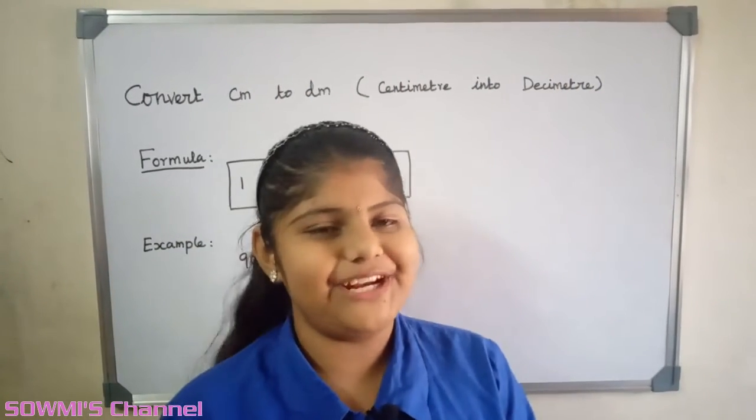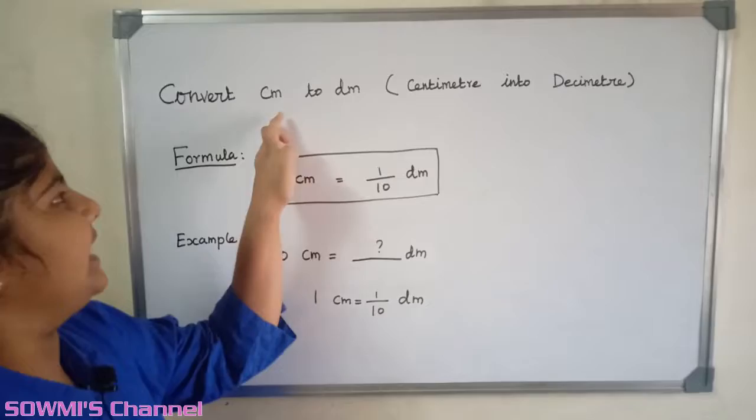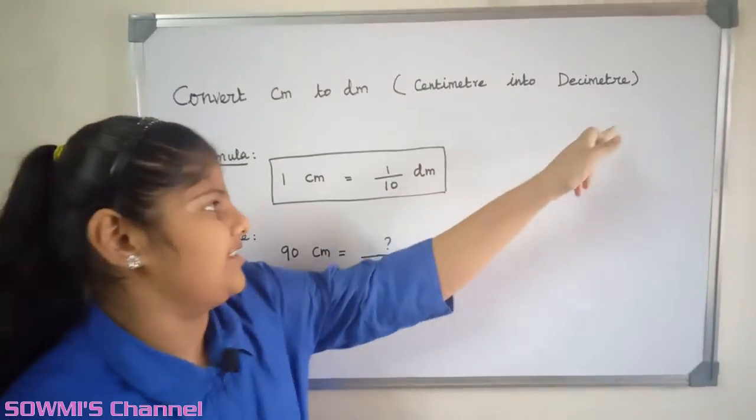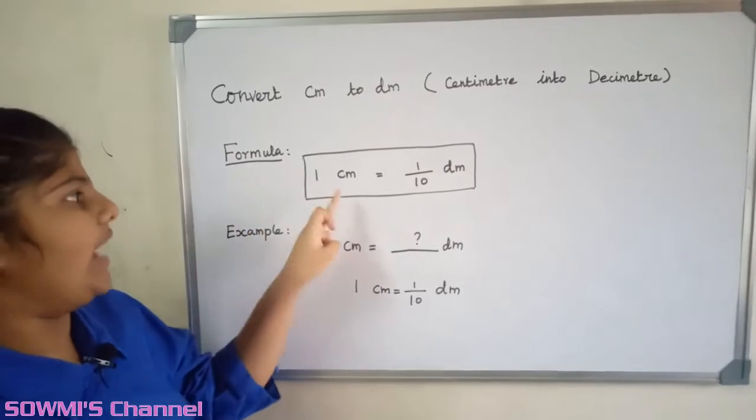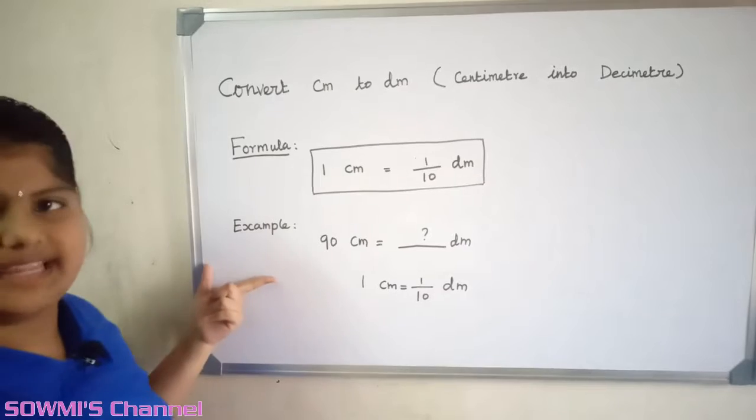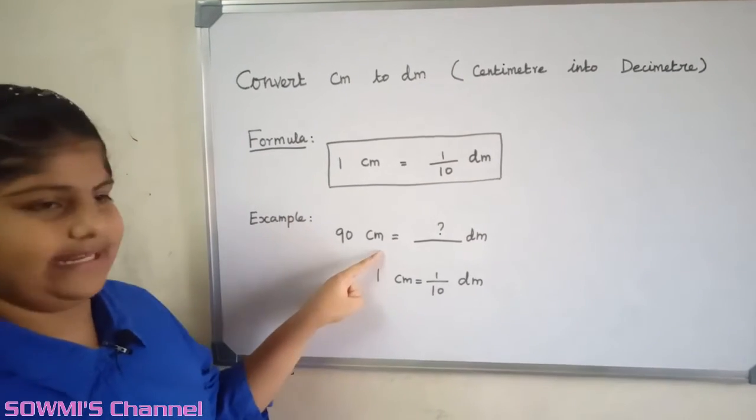Hi friends, in this video we are going to see how to convert centimeters to decimeters. The formula is: 1 centimeter is equal to 1/10 decimeter. Let us see an example: 90 centimeters.